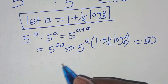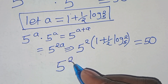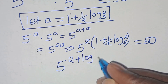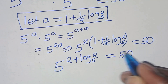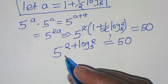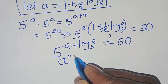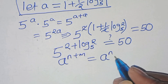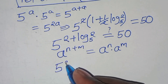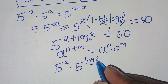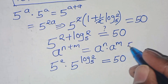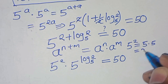Substituting the value of a, we have 5 to the power 2 times (1 plus one-half·log base 5 of 2), which should equal 50. Opening the bracket gives 5 to the power (2 times 1 plus 2 times one-half·log base 5 of 2). Since 2 times one-half simplifies to 1, this is 5 to the power (2 plus log base 5 of 2). Using the exponent property a^(n+m) = a^n times a^m, this becomes 5^2 times 5^(log base 5 of 2). Now 5^2 equals 25.